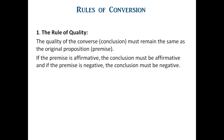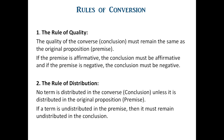Now we will study the rules of conversion. The rule of quality states that the quality of the converse, that is the conclusion, must remain the same as the original proposition, that is the premise. If the premise is affirmative then the conclusion must be affirmative, and if the premise is negative then the conclusion must be negative. The second rule is the rule of distribution: no term is distributed in the converse unless it is distributed in the original proposition. If a term is undistributed in the premise then it must remain undistributed in the conclusion.